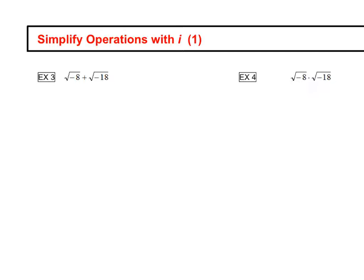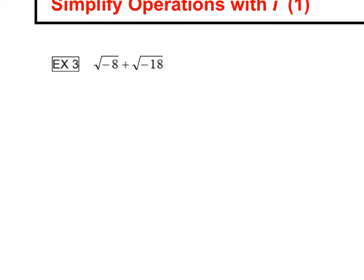So we have the square root of negative 8 plus the square root of negative 18, so we're going to bring in i on this example right away because we have the square root of that negative 1, which is i square root of 8 plus square root of negative 18 is i square roots of 18.